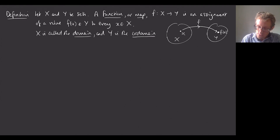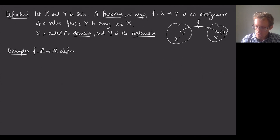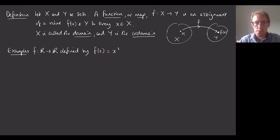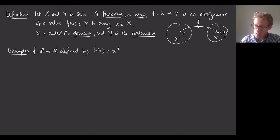Let's look at some examples. We could have a function from the real numbers to the real numbers defined by f(x) = x². That's probably a function you've seen before. This is a nice one where there is a formula that tells us how to do the assignment — it takes any real number and returns the square of that, which is also a real number.